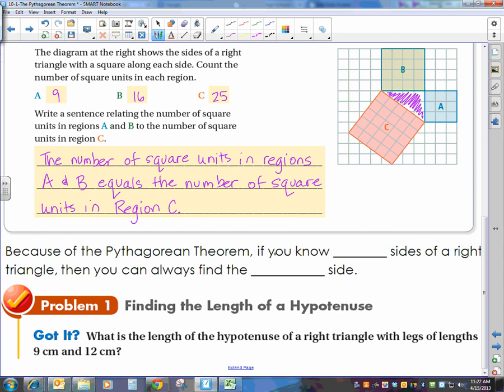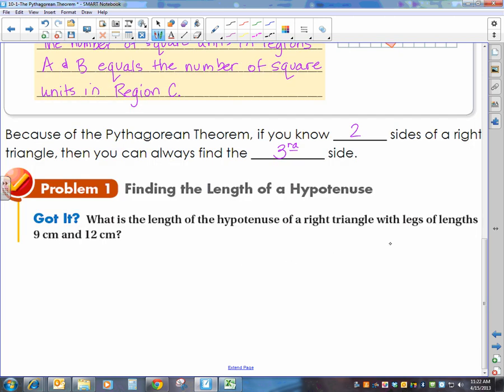Now, because of this Pythagorean theorem, if we know two sides of a right triangle, then we can always find the third side. So we have here, it says, what is the length of a hypotenuse of a right triangle with legs of lengths 9 and 12?